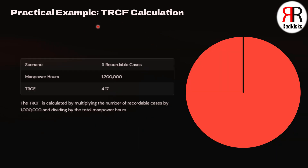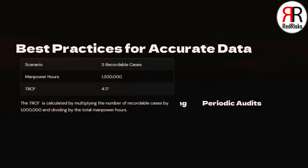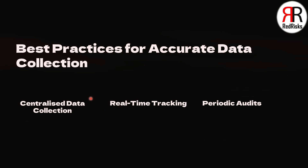Now an example for Total Recordable Case Frequency. There were five recordable cases and a total of 1.2 million manpower hours. The TRCF is 4.17 — that is 5 multiplied by 1,000,000, then divided by 1,200,000.